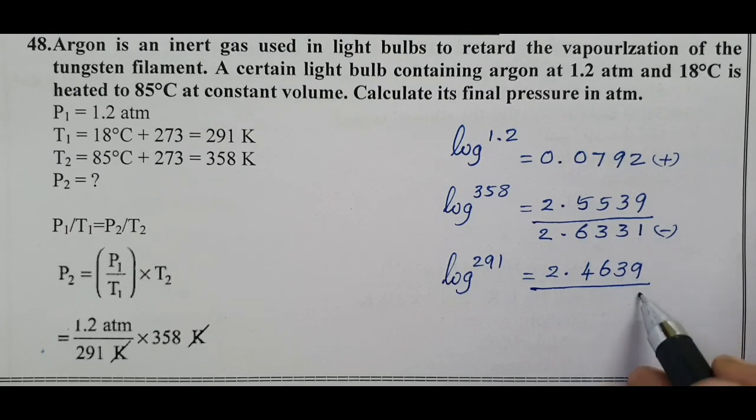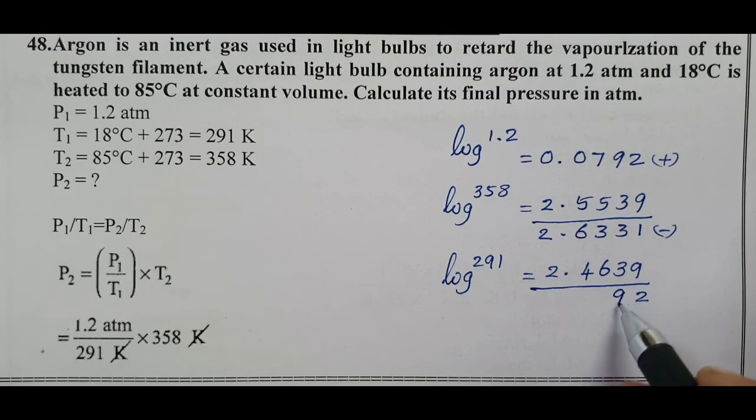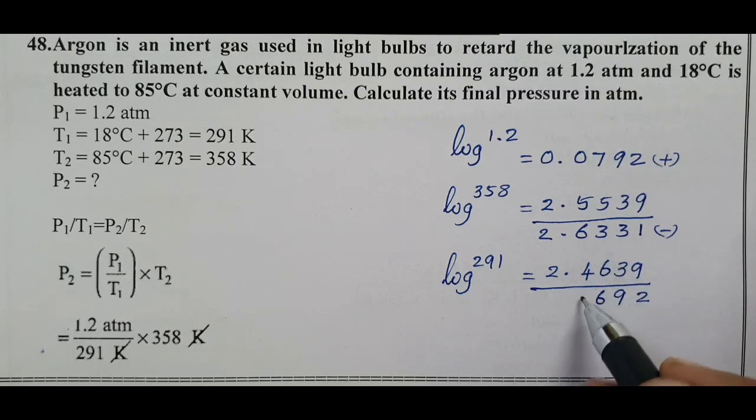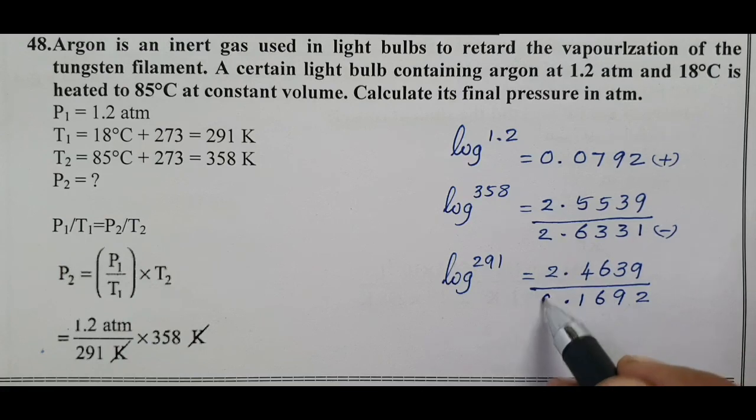Since it's division, we subtract. 11 minus 9 equals 2. 12 minus 3 equals 9. 12 minus 6 equals 6. 5 minus 4 equals 1. 2 minus 2 equals 0. This value becomes the antilog.